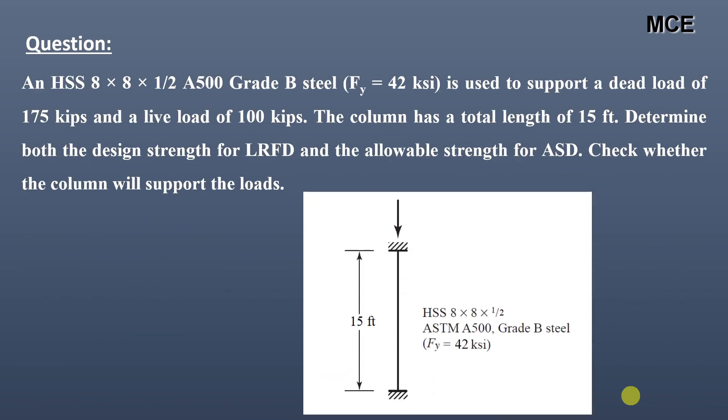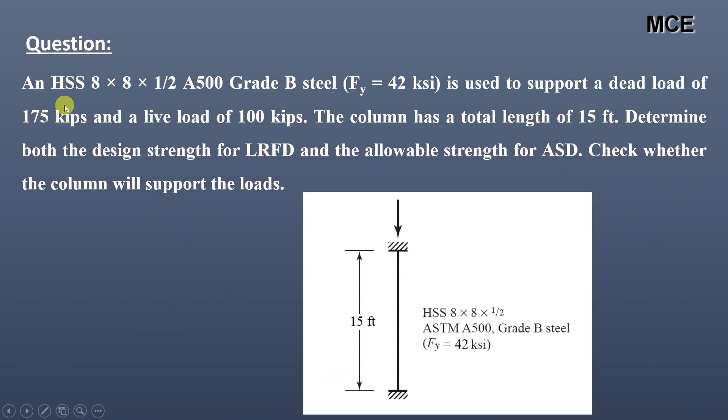The question is given and it states that an HSS 8 x 8 x 1/2 A500 grade B steel having yield strength of 42 ksi is used to support a dead load of 175 kips and a live load of 100 kips.